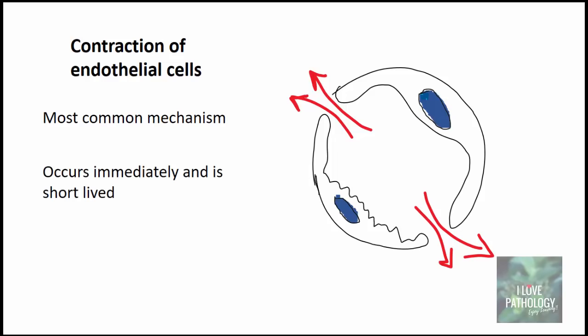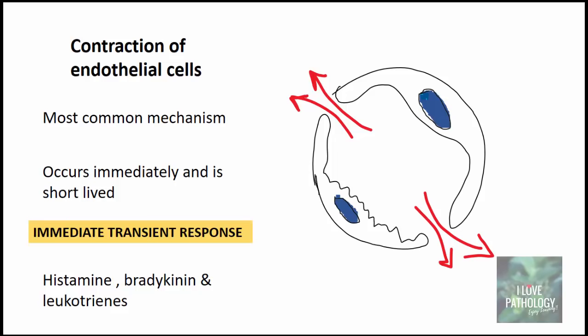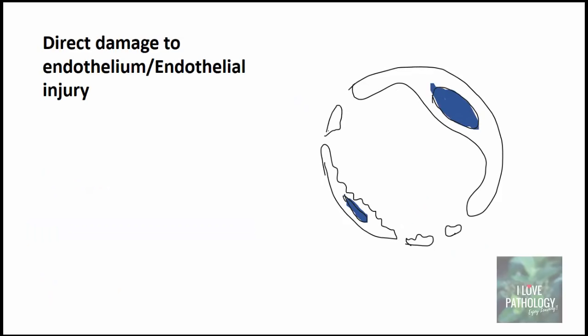The contraction of endothelial cells occurs immediately and is short-lived. The chemical mediators responsible are histamine, bradykinin, and leukotrienes. Because it is immediate and short-lived, this mechanism is also referred to as the immediate transient response.